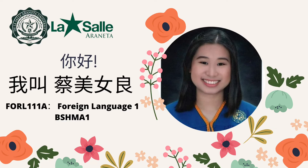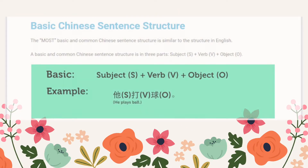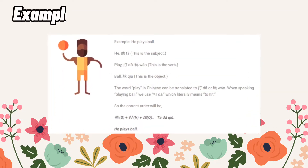Ni hao, wo chiao, chai mei liao. Today I will talk about the basic Chinese sentence structure. The most basic and common Chinese sentence structure is similar to the structure in English. A basic Chinese sentence structure is in three parts: subject plus verb plus object.